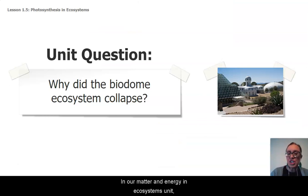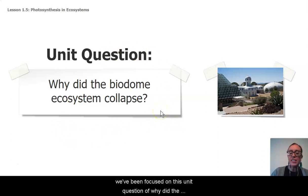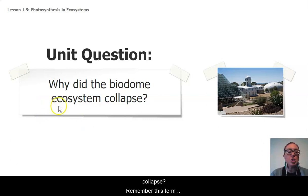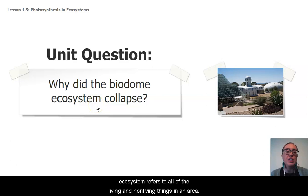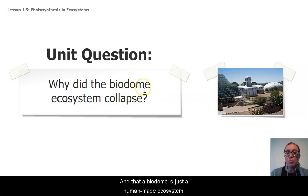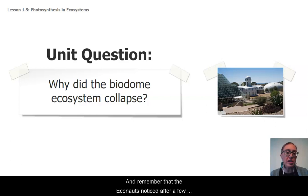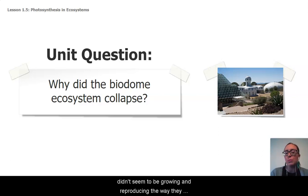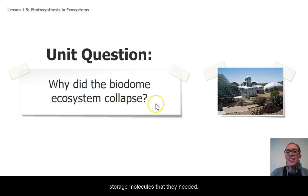In our Matter and Energy and Ecosystems Unit, we've been focused on this unit question of why did the Econauts' biodome ecosystem collapse. The term ecosystem refers to all of the living and the non-living things in an area, and a biodome is just a human-made ecosystem. The Econauts noticed after a few years that the plants and animals living in this biodome didn't seem to be growing and reproducing the way they should and didn't have enough of those energy storage molecules that they needed.